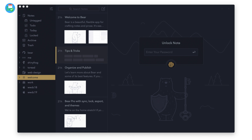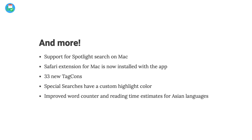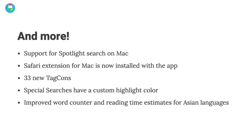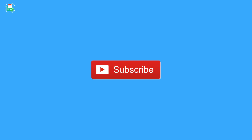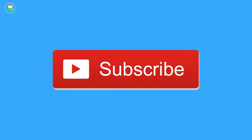They've also added support for Spotlight search on Mac, 33 new tag icons, and the Safari extension for Mac is now installed automatically with the application, so you don't have to do that legwork manually. Although this is a smaller update, it is focused on encryption and helping you secure your Bear account. Do check out this update — Bear is a great writer application and was featured in our top five note-taking applications video.